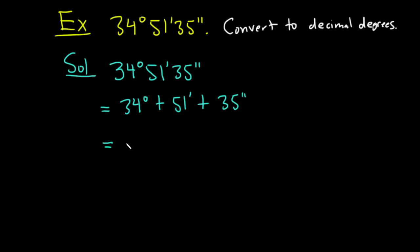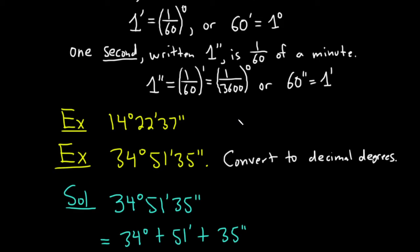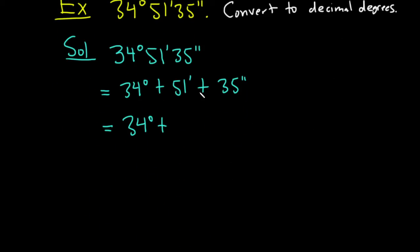And so this is equal to 34 degrees plus, so the 51 minutes if you recall each minute up here is 1/60th of a degree. Remember it takes 60 minutes to make a degree. So this will be 51/60ths of a degree.